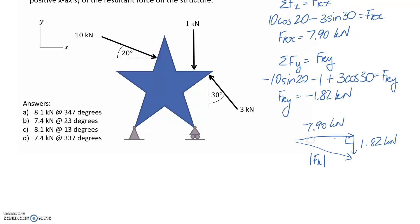So because this is like a right-angled triangle, we should be able to use Pythagoras' theorem to find the hypotenuse of it. So it's going to be 7.9 squared on this side, plus the 1.82 squared on the other side. So this gives us a magnitude of 8.10 kilonewtons.